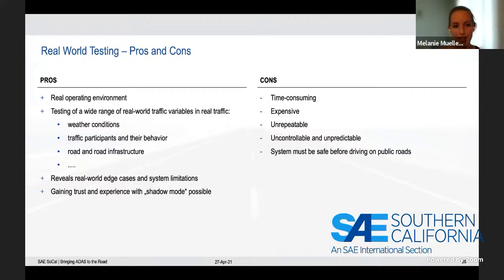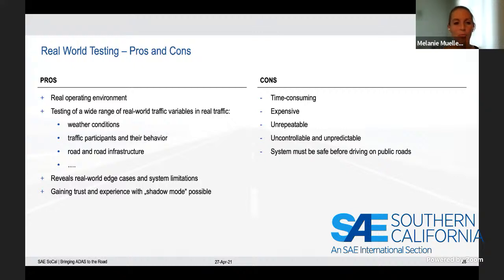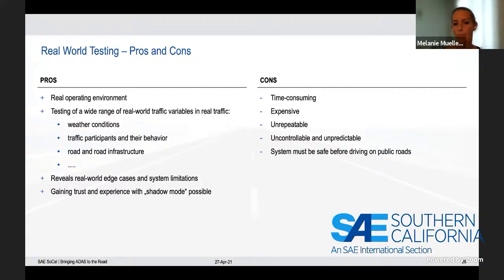With so many variables being tested in the real world, it's also good for revealing edge cases and system limitations. If you drive on real roads, sometimes you encounter the behavior of other traffic participants you did not expect, which could lead to edge cases or reveal system limitations. Another big benefit is that you can do real-world testing in combination with shadow mode to gain trust and experience with systems — you can deactivate strong steering or braking reactions and just have a trigger in the background. Whenever the system would react, the trigger records the event and you can analyze afterwards whether that would have been the desired behavior.